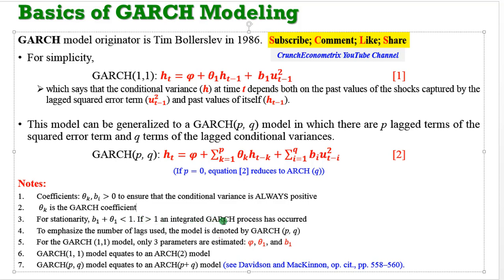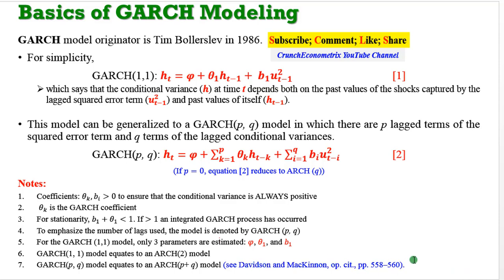For the GARCH(1,1) model, you are only going to estimate three parameters: phi, theta, and beta. The GARCH(1,1) model equates to an ARCH(2) model. Therefore, a GARCH(p,q) model equates to an ARCH(p+q) model. For more on that, I will refer you to Davidson and MacKinnon, as shown on the screen, for you to know how these mathematical constructs came about.